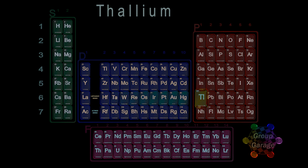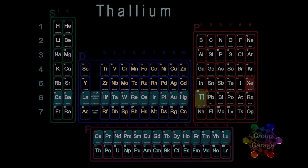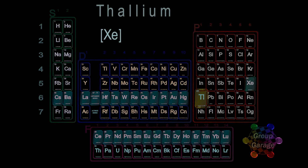Highlight thallium and all the elements in the row to the left. From the previous row, period 5, we write the noble gas xenon, shorthand Xe.